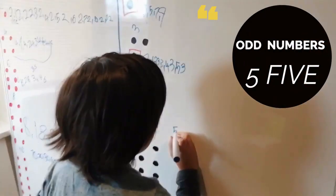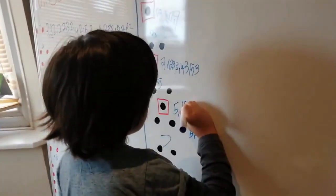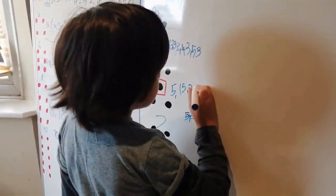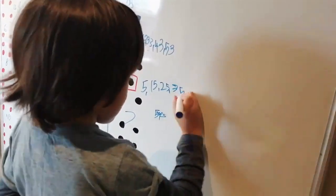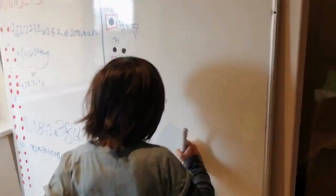So now go to five: five, fifteen, twenty-five, thirty-five, forty-five, and fifty-five, very good.